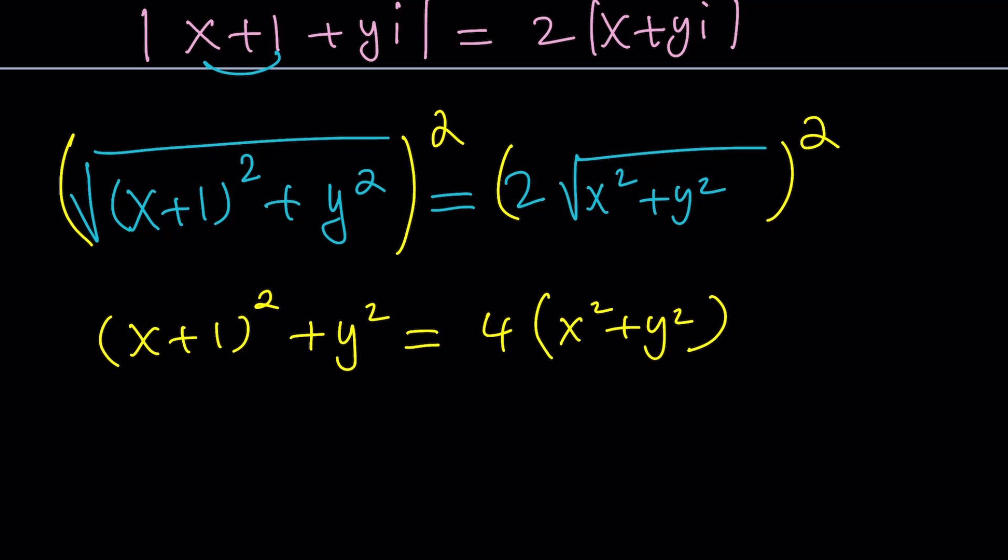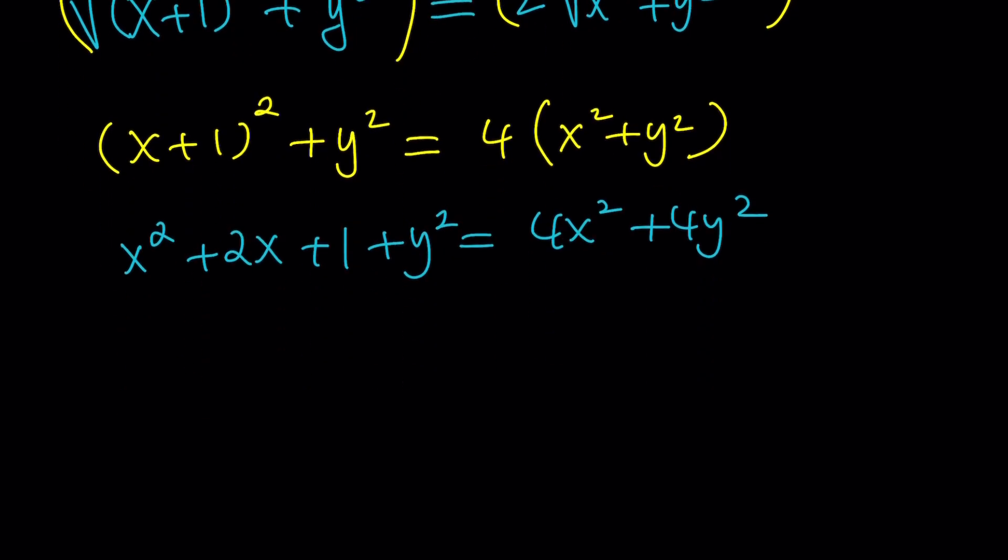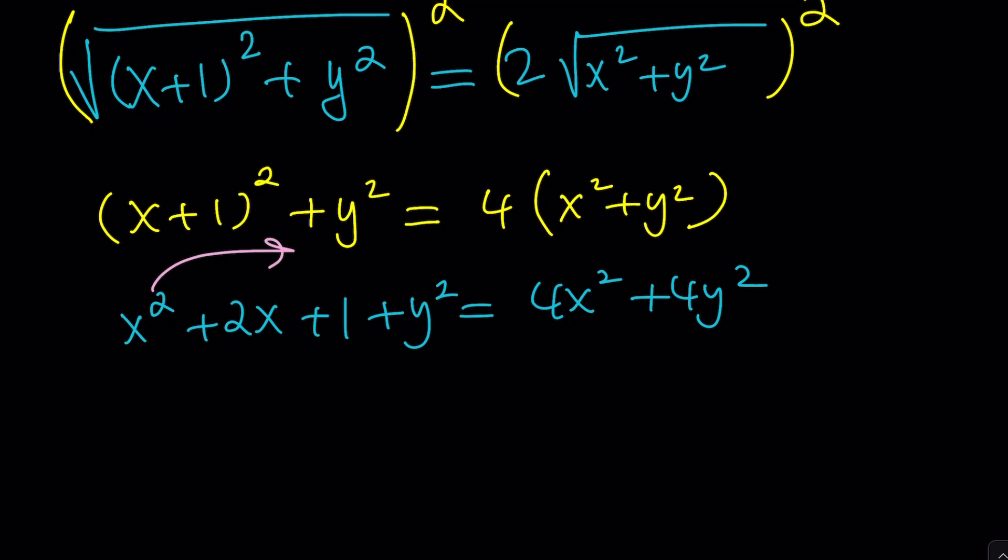We're going to get x plus 1 squared plus y squared equals. Now, when you square the 2, you're going to get a 4, and that'll be multiplied by x squared plus y squared. Awesome. What do we do next? Expand, expand, expand, and distribute, and simplify. Okay, you get the idea? x squared plus 2x plus 1 plus y squared equals 4x squared plus 4y squared. So far, so good? Not really. We still have to do more work. So, we're not happy yet.